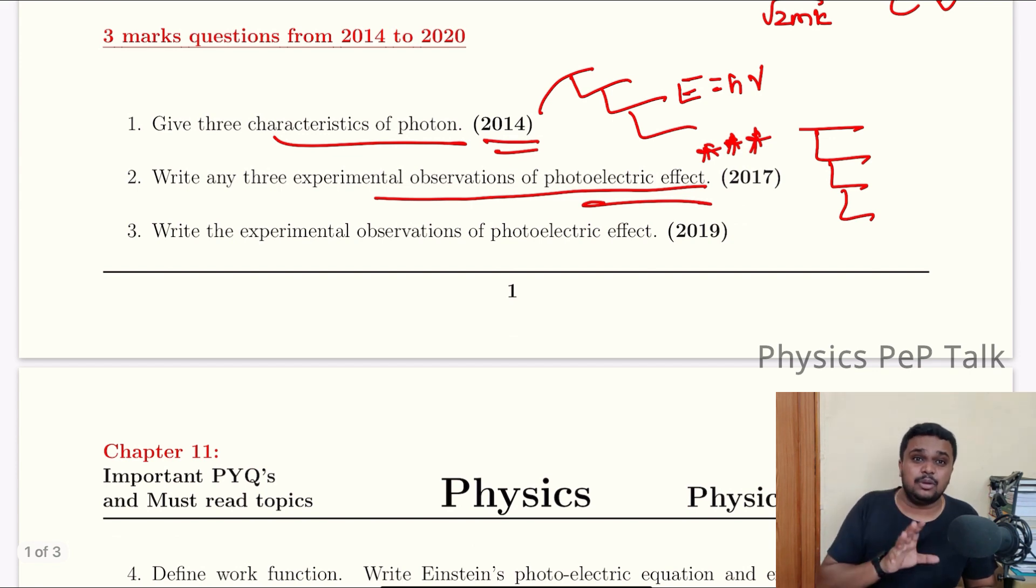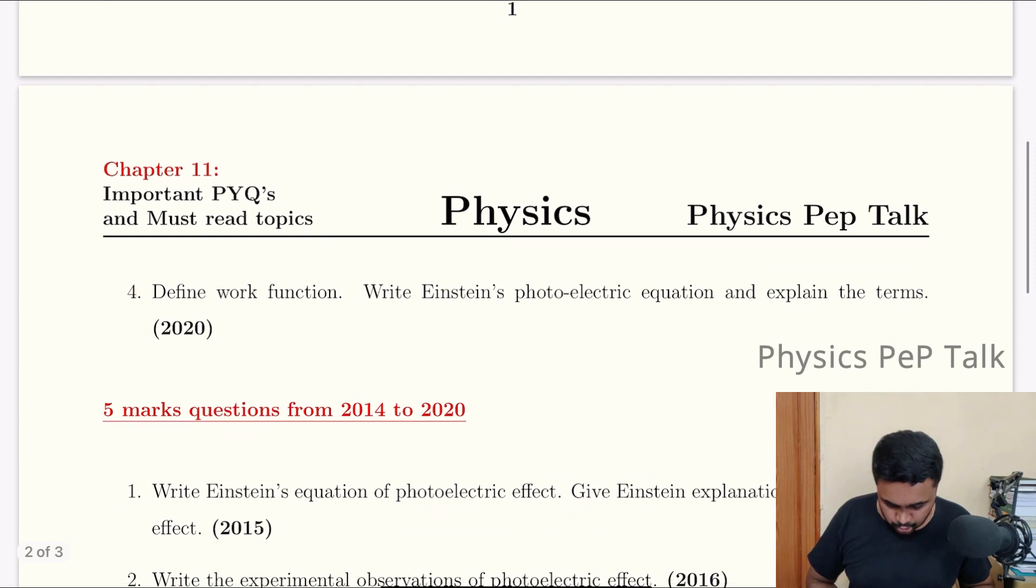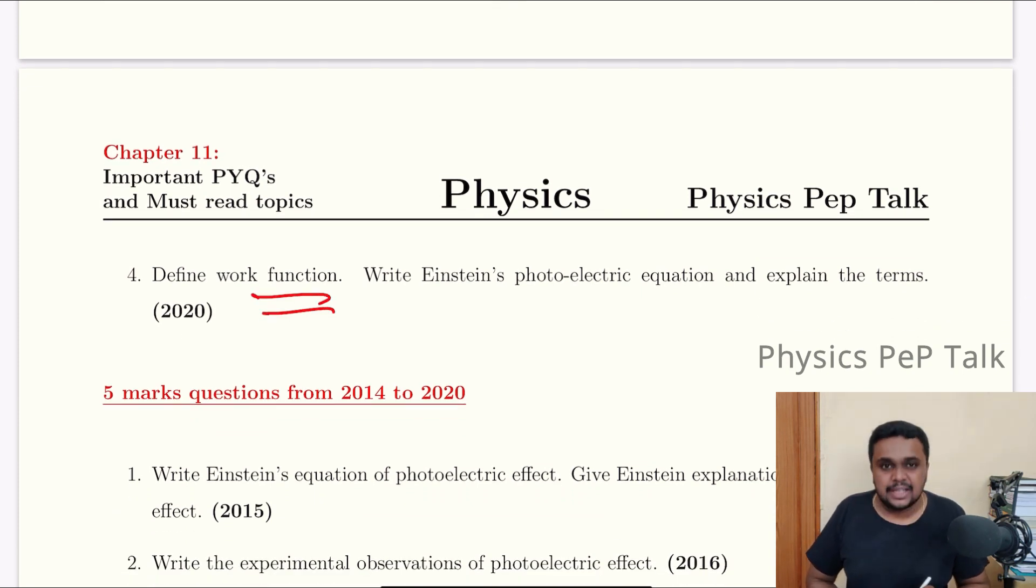For 5 marks, explain these four points fully and you'll get 5 marks. In 2019 the same question repeated - experimental observation of photoelectric effect. In 2020: what is work function? The minimum energy required to remove an electron from the surface of a metal is called work function.